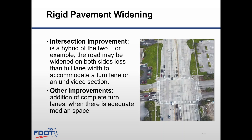Intersection improvement is the hybrid of the two. For example, the road may be widened on both sides less than full lane width to accommodate a turn lane on an undivided section. Other improvements include the addition of complete turn lanes where there is adequate median space.